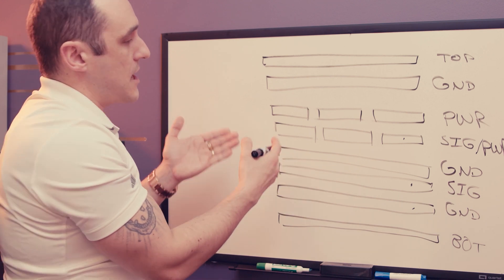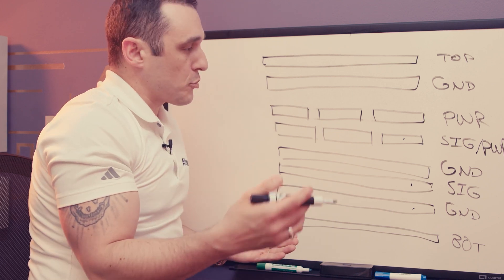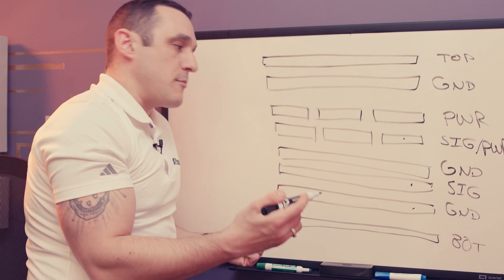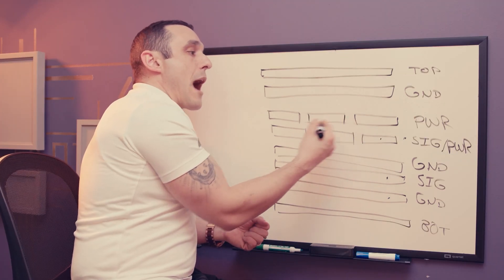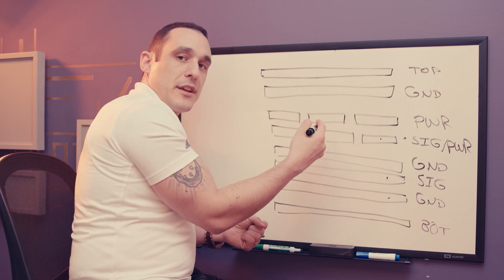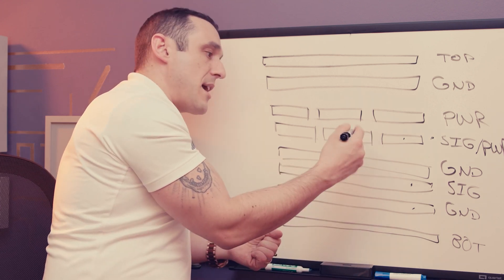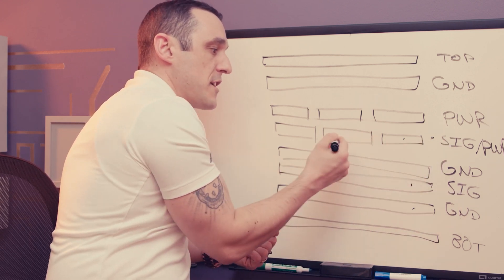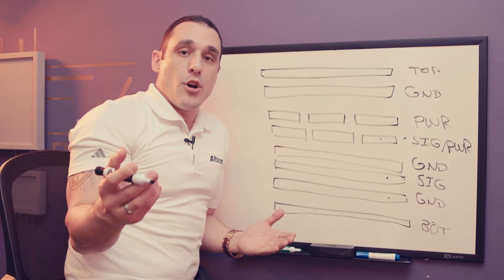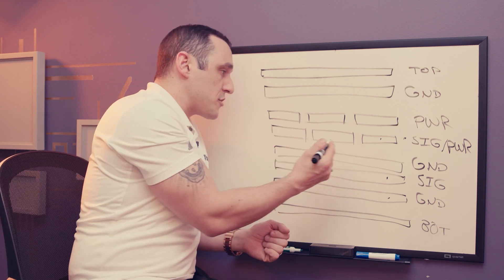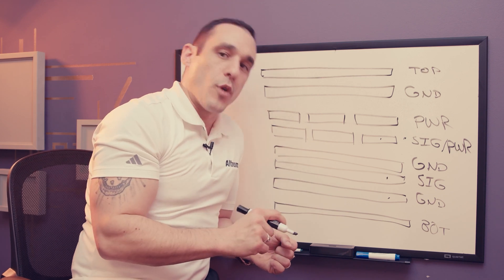When we have splits in the power layer and signals running nearby, the potential problem is radiated emissions whenever a signal on, say, layer four crosses a split between two power rails on layer three. Placing a ground layer nearby helps suppress those radiated emissions by minimizing the impedance discontinuity that a signal would see as it crosses that split. We've done a video about this where we looked at the S-parameters for traces that cross over a split on the power layer — make sure to check out the link in the description.